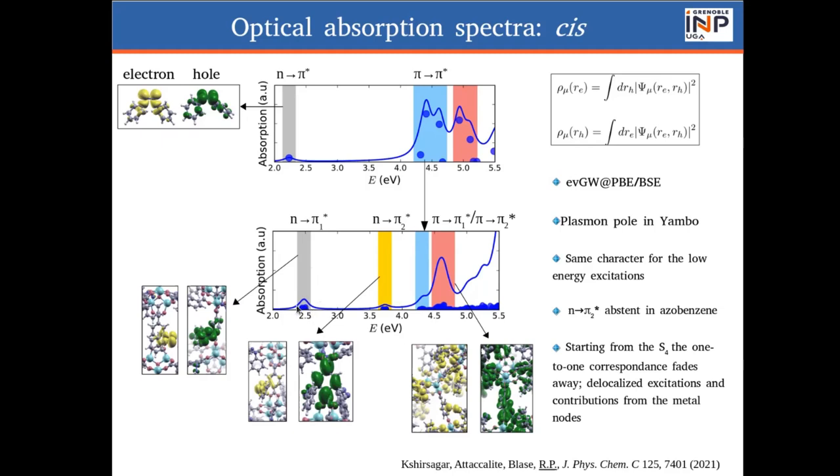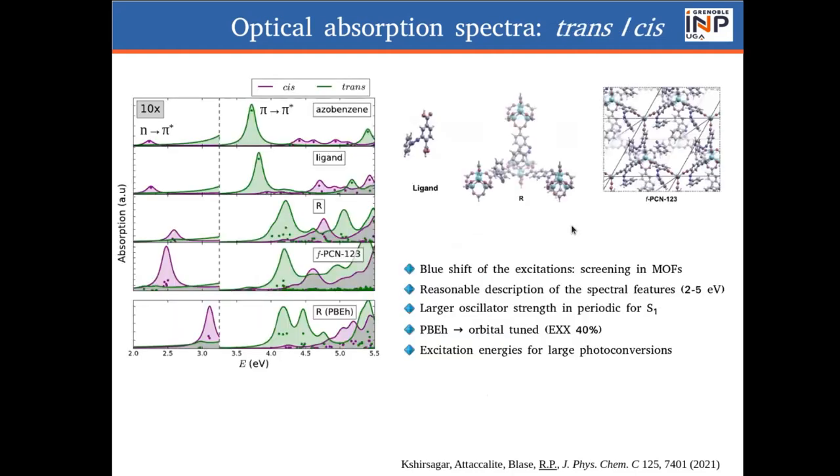And here what I'm plotting is the electron-hole density. In the case of the full MOF, the excitation, the spectrum is different indeed. We have these states, these excitations, that are not present in the ligands, because the pi-star states are not present in the isolated ligand. So this is the breakdown of the molecular description. And we also see that the S1 is rather intense. At low energy, more or less, we have a fair description, but as you go from after the S4 here, the description is kind of breaking away.